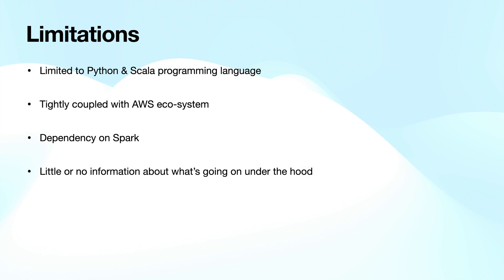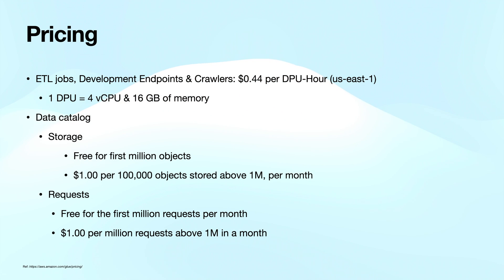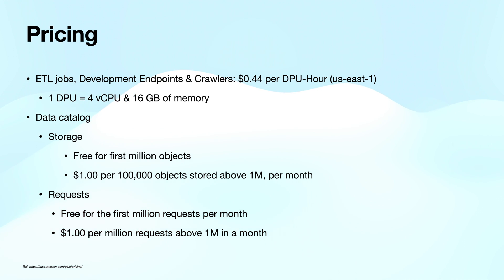Let's discuss pricing. You will be charged $0.44 per DPU hour for ETL jobs, development endpoints, and crawlers. One DPU has 4 vCPU and 16 GB of memory. For Data Catalog storage, it's free for the first million objects, then $1 per 100,000 objects stored above 1 million per month. For Data Catalog requests, it's free for the first million requests per month, then $1 per million requests above 1 million in a month.